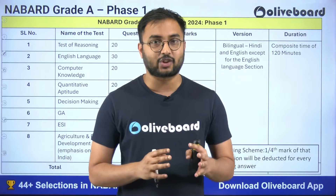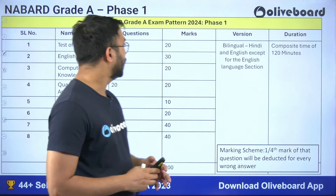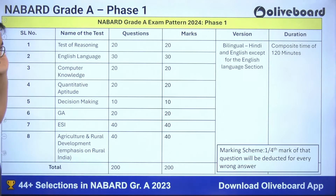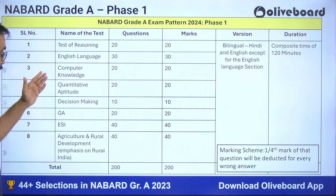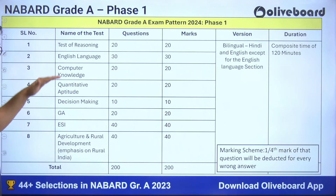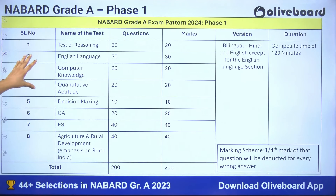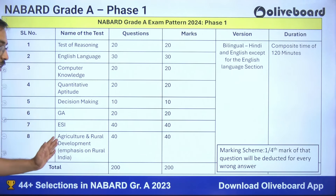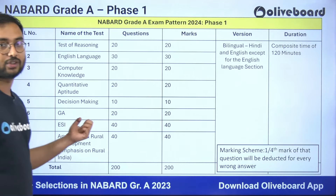There are 8 sections: reasoning, English, computer knowledge, quantitative aptitude, and decision making — these are qualifying sections. The first 5 sections are qualifying in nature. The last 3 sections — 6, 7, and 8 — that is GA, ESI, and Agriculture, are merit sections.